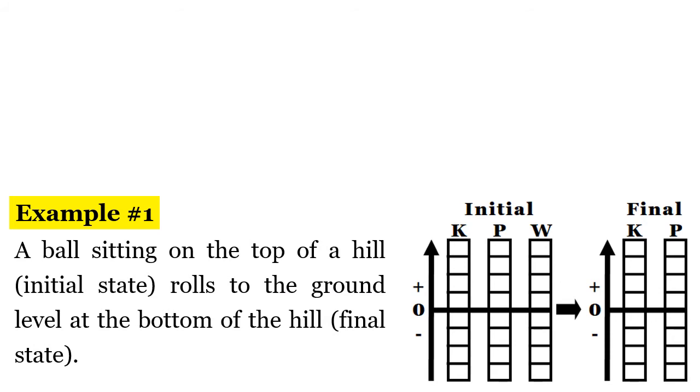So we're going to go through a couple of examples and we're going to essentially graph the information. It says a ball sitting on the top of a hill rolls to the ground level at the bottom of the hill. So you've got a hill and you've got a ball sitting up at the top here and the ball rolls down the hill.